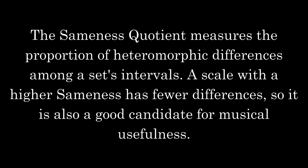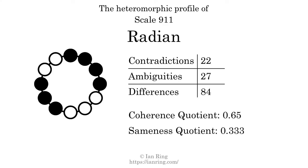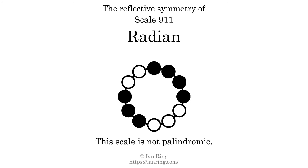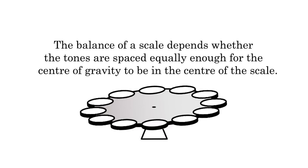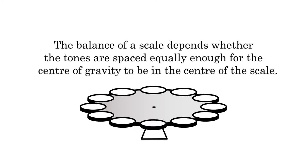This scale has no reflective symmetry. This scale has a different pattern of intervals ascending and descending, so it is not palindromic. This scale has no ridge tones. The balance of a scale depends on whether the tones are spaced equally enough for the center of gravity to be in the center of the scale. This scale is not balanced.